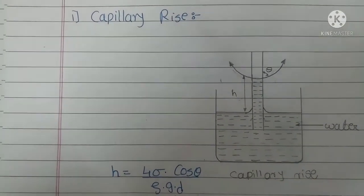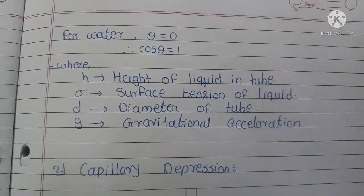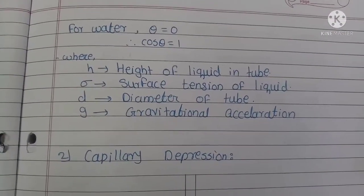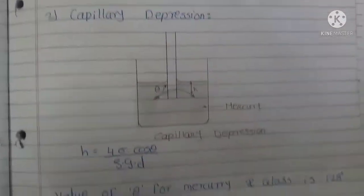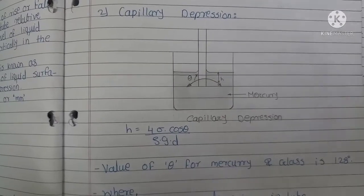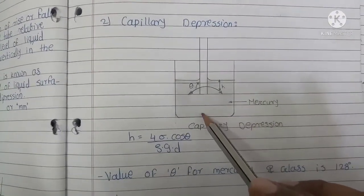The next method is capillary fall or capillary depression. This is the opposite phenomenon where the liquid level in the tube falls below the general level.